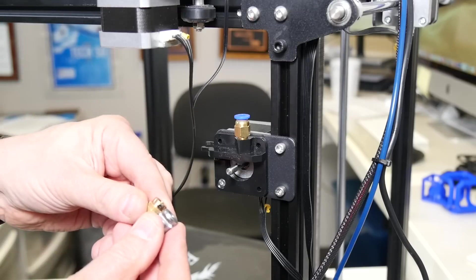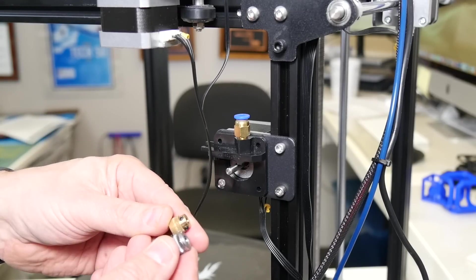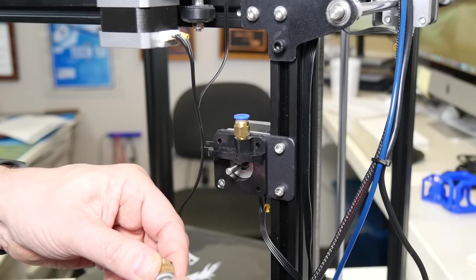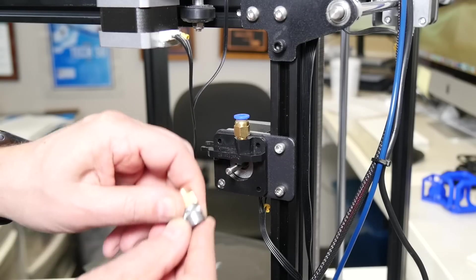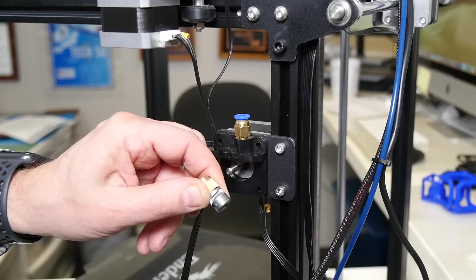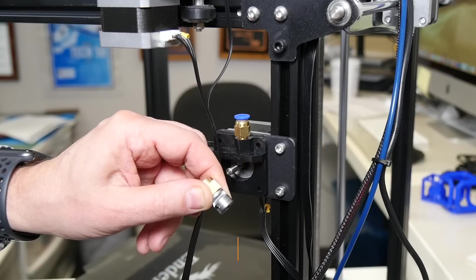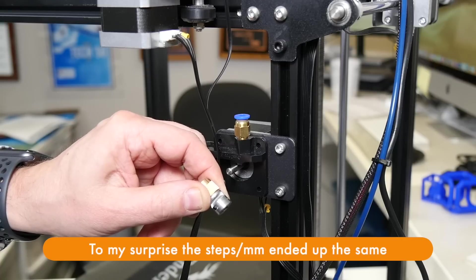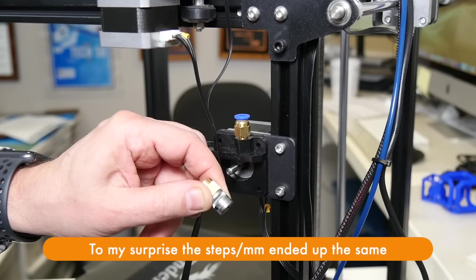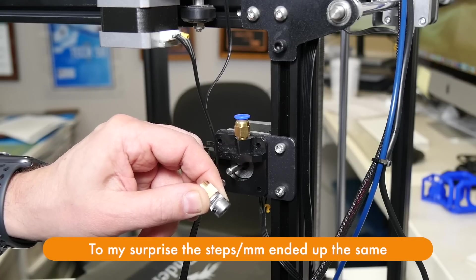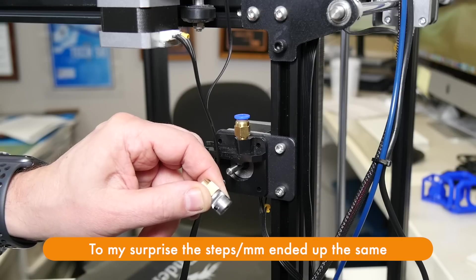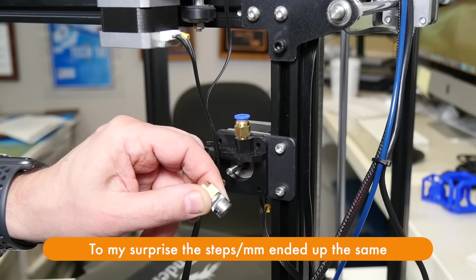And if you compare it to the new gear we're going to use, you'll see that they are potentially slightly different sizes. So that's going to change the steps per millimeter that we need to set our extruder to. So we will have to recalibrate our extruder.